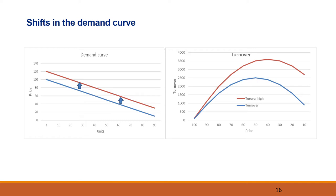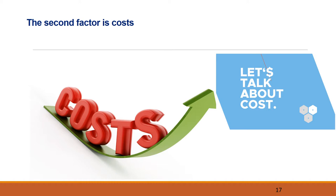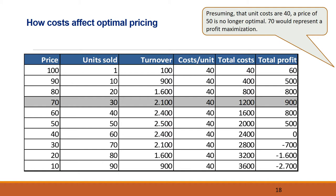The second important factor when companies are pricing their products is the cost of producing these products. We will explain more about costs in a separate video, but today we confine ourselves to only cost implications for the pricing issue at hand. On the previous slides, the effect of lowering prices was explained and it was shown that turnover was not maximized with a high price, but with a price of 50 or 40. However, a company is not interested in maximizing turnover, but in maximizing profit — which is also why costs must be considered.